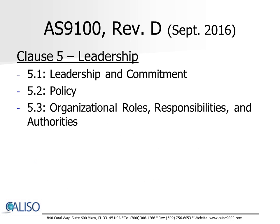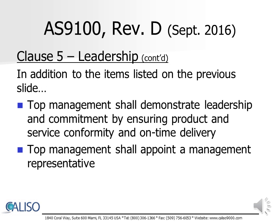Clause 5 outlines the requirements for demonstrating top management leadership and commitment, establishing and communicating a quality policy, and for ensuring that the organizational roles, responsibilities, and authorities are communicated and understood. In addition to those requirements, AS9100D requires that top management shall demonstrate leadership and commitment by ensuring product and service conformity and on-time delivery, and shall appoint a management representative.